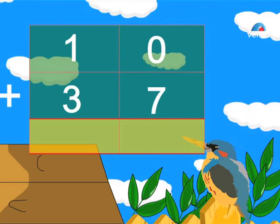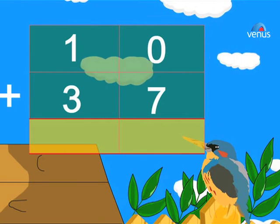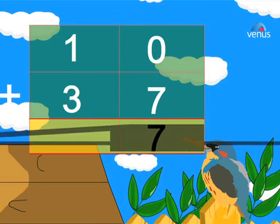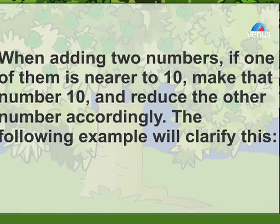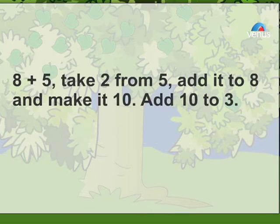10 plus 37 equals 47. When adding two numbers, if one of them is nearer to 10, make that number 10 and reduce the other number accordingly. The following example will clarify this: 8 plus 5. Take 2 from 5, add it to 8 and make it 10, then add 10 to 3.